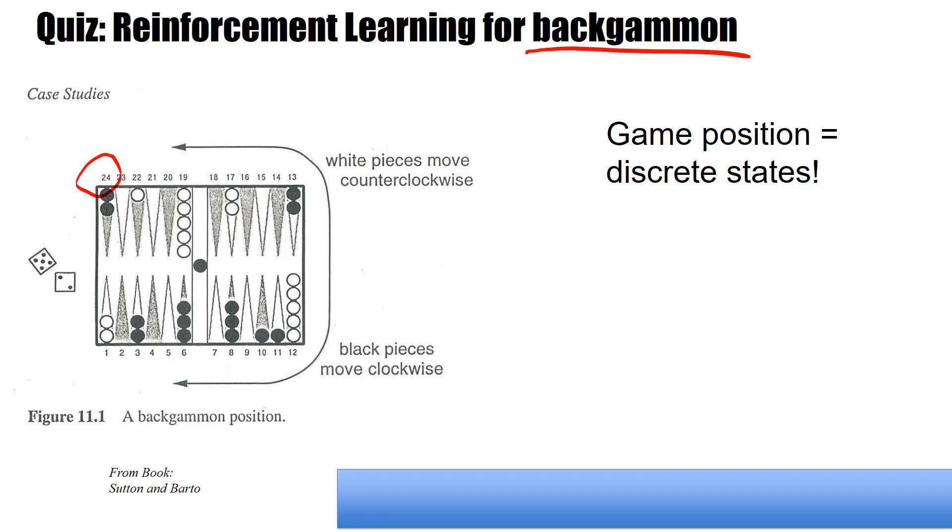And one important thing to know is that if there are two pieces of the same color on a field, then these two pieces are protected against the other player. So the game position is just a number of discrete possibilities. So we have discrete states.